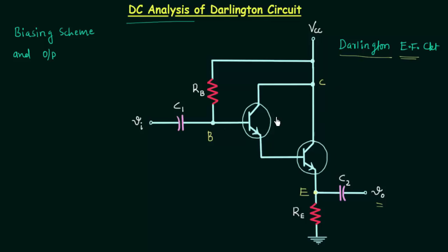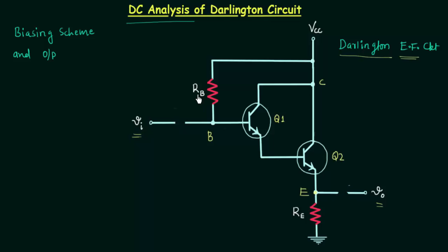This transistor is the first transistor Q1, and this transistor is the second transistor Q2. Together they make the Darlington transistor. Vi is the input voltage. C1 and C2 are the coupling capacitors, and for DC the reactance offered by C1 and C2 is infinity, so I will open-circuit C1 and C2 for the DC analysis. The resistance RB is the base resistance and this resistance is the emitter resistance.